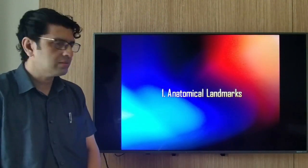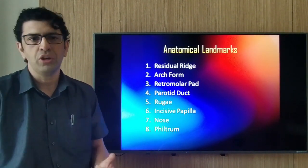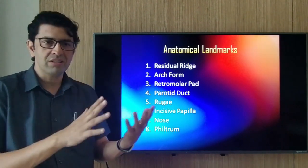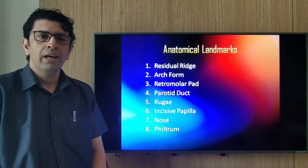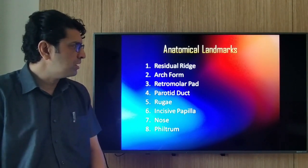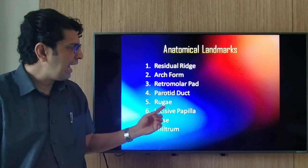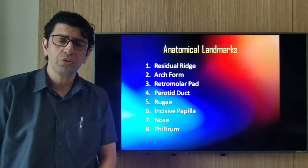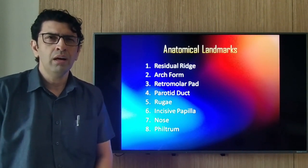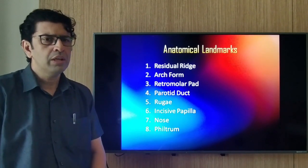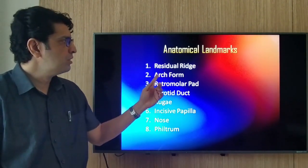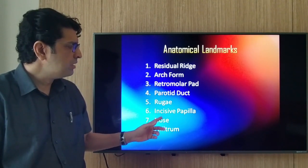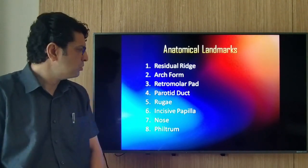Looking at anatomic landmarks, there are quite a few: the residual ridge, arch form, retromolar pad, parotid duct, rugae, incisive papilla, nose, and philtrum. The most important ones are residual ridge, arch form, retromolar pad, and incisive papilla. The maxillary anterior teeth are usually set labial to the ridge, while the mandibular anterior teeth are near the crest. The maxillary posterior palatal cusp should be centered over the mandibular ridge, and mandibular posterior teeth should not be set too far from the crest.